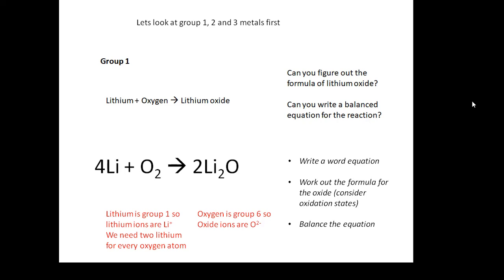Lithium is in group one so lithium ions are Li+, so you need two lithium ions for every oxygen atom. And oxygen is group six so its oxide ions are O2-.